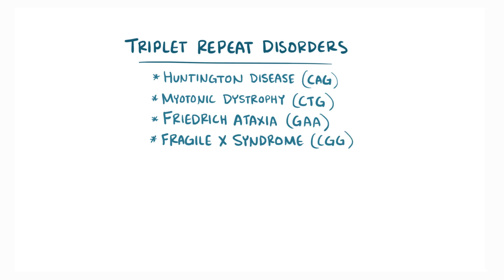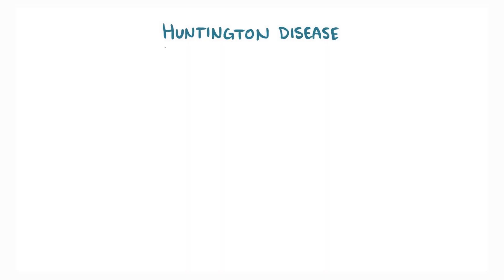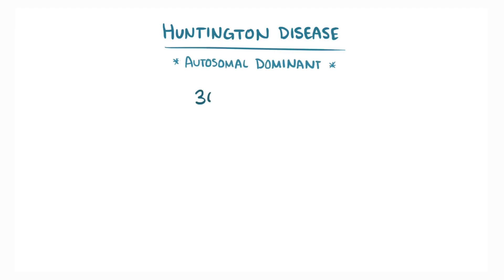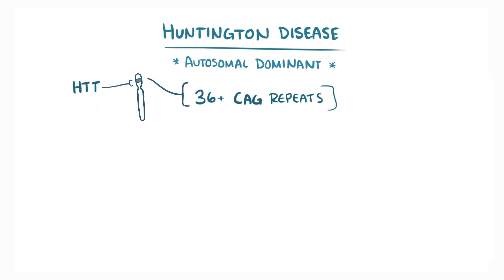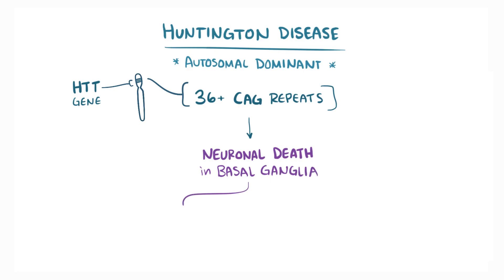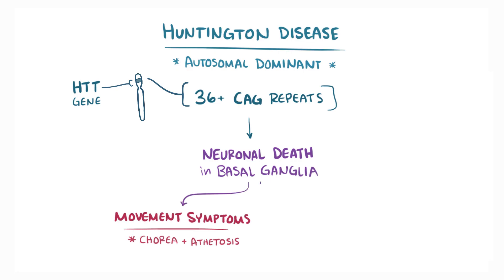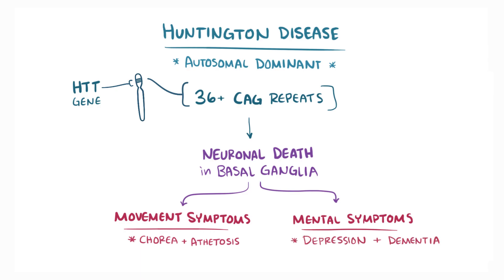As a quick recap: Huntington disease is an autosomal dominant disease caused by having 36 or more trinucleotide repeats of CAG in the Huntington gene, which causes neuronal cell death in the basal ganglia, causing movement symptoms like chorea and athetosis, as well as mental symptoms like depression and dementia.